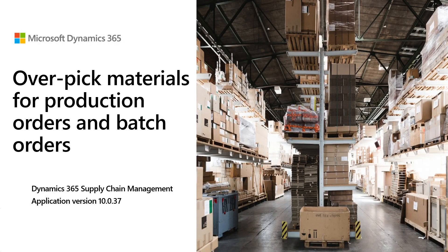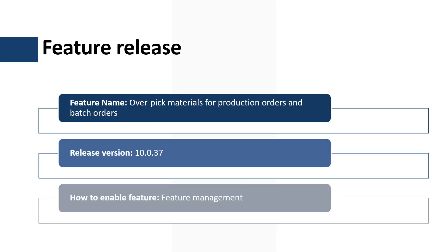Welcome to this tutorial where we will review how to manage material overpicking in the production flow using the warehouse management mobile application. This functionality is controlled by the 'Overpick Materials for Production Orders and Batch Orders' feature, released as part of application version 10.0.37 and managed by the Feature Management workspace.